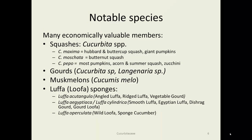Notable species: the squashes are Cucurbita species. Hubbard and buttercup squash — buttercup being one of my favorites — is Cucurbita maxima. Butternut squash is Cucurbita moschata. And most pumpkins, acorns, summer squash, and zucchinis are Cucurbita pepo.